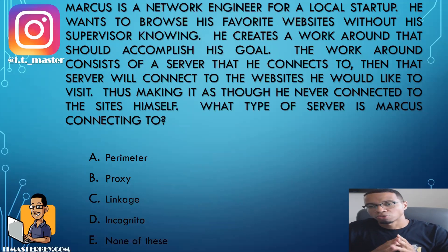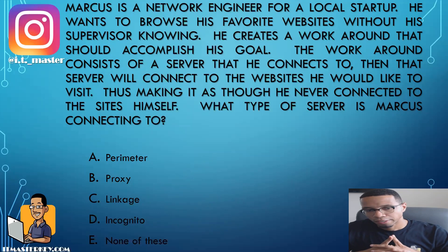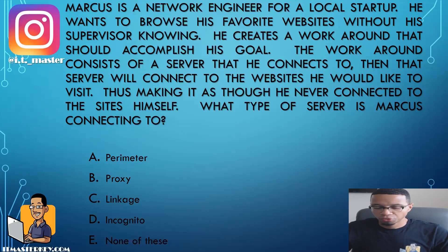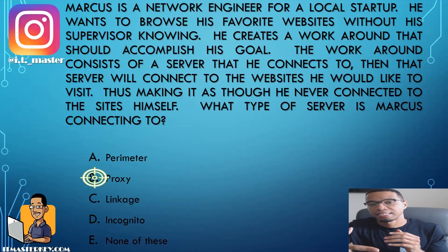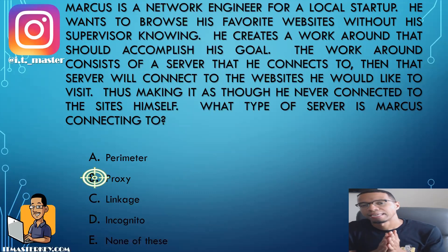Marcus is a network engineer for a local startup. He wants to browse his favorite websites without his supervisor knowing. He creates a workaround consisting of a server that he connects to, and that server will connect to the websites he'd like to visit, making it appear as though he never connected to the sites himself. What type of server is Marcus connecting to? A proxy server — it acts as a go-between or middleman that connects to devices for you, masking your identity.